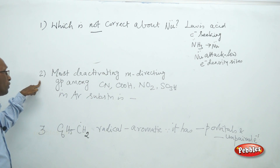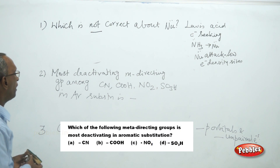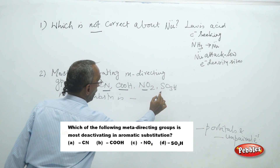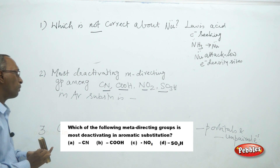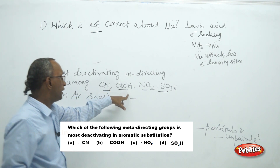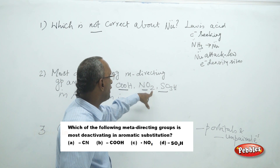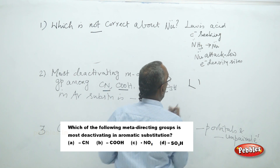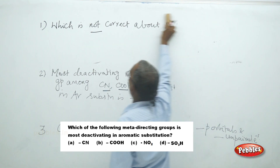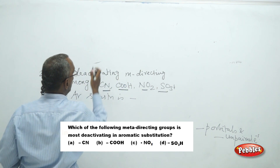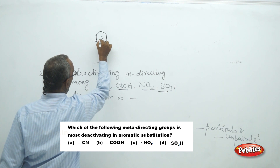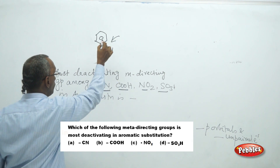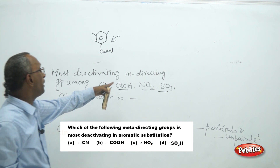The second question gives some deactivating groups: cyano group (CN), carboxyl group (COOH), nitro group (NO2), and sulfonic acid group (SO3H). These are called meta-directing groups. In a mono-substituted compound, for example benzoic acid, on further substitution the next substituent goes to the meta position only. That is what is meant by meta-directing.